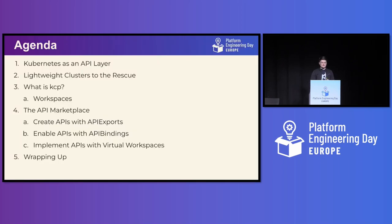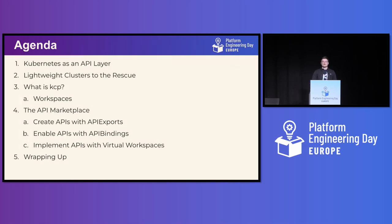For today, I want to first talk about Kubernetes as an API layer — basically recapping what a lot of you are probably already doing. Then I want to talk about some solutions that have emerged in the ecosystem. And then we're going to dive into KCP, the difference to existing solutions, and walk through managing an API.